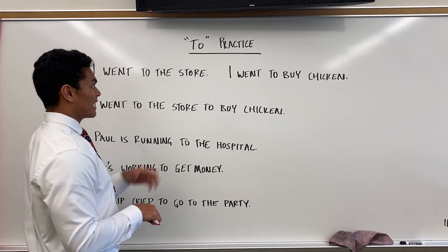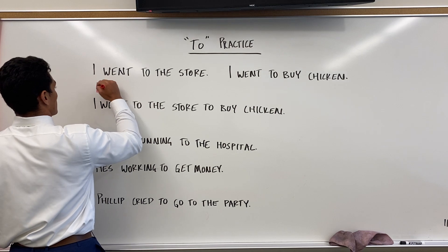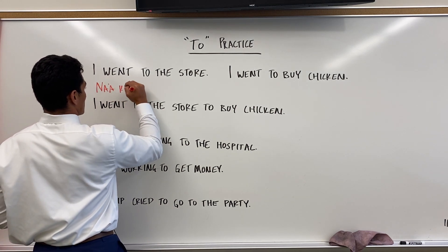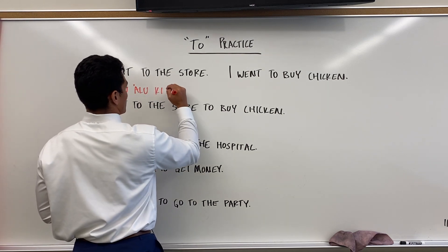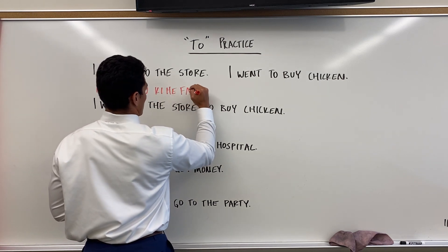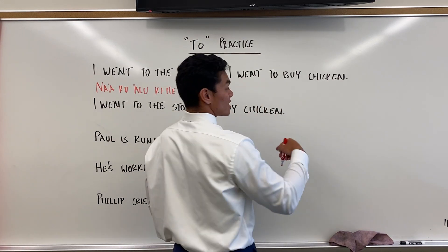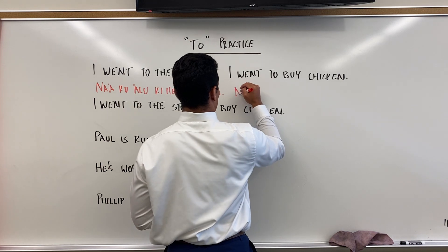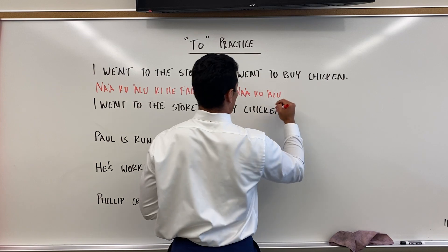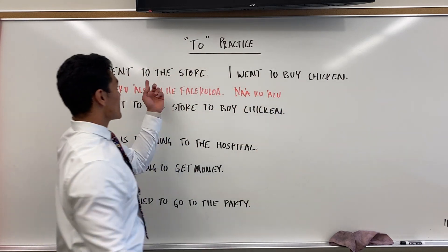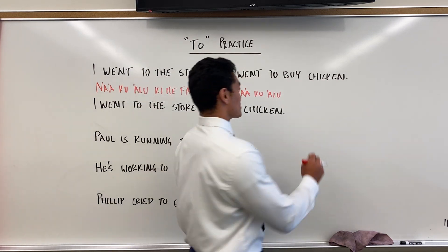So: 'I went to the store' — easy enough. 'I went to buy chicken.' The 'I went' is the same, but the 'to' is different. The first is directional — going to a place — but the second means I went for the purpose of buying chicken.